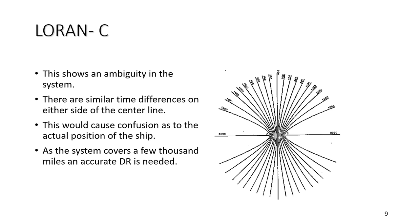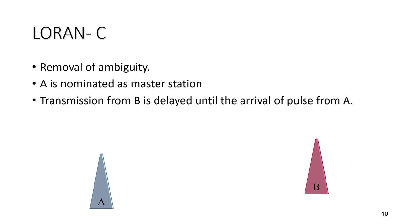If the master and slave transmit simultaneously, a fundamental line-of-position ambiguity exists in the vicinity of the center line. For example, if station A is the master and station B's transmission is delayed until arrival of the pulse from A, but both transmit simultaneously, the receiver on the ship is unable to distinguish between the master and slave signals because both are transmitted at the same frequency — 100 kilohertz — making it impossible to determine whether the master or slave signal was received first.